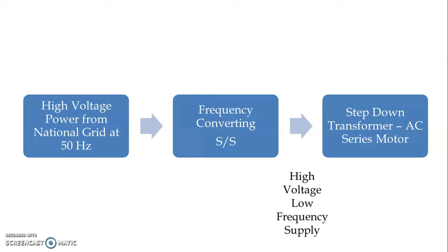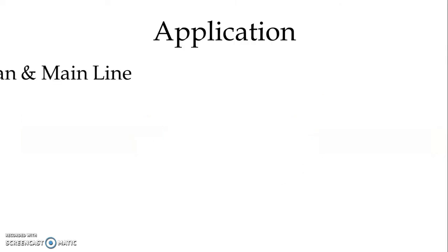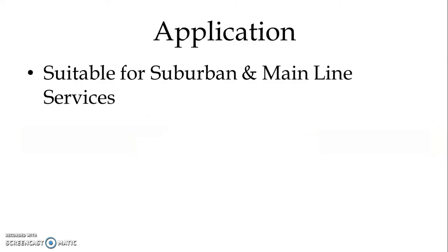High voltage low frequency supply is fed to the locomotive. The single phase AC system with low frequency high voltage is suitable for suburban and mainline services.